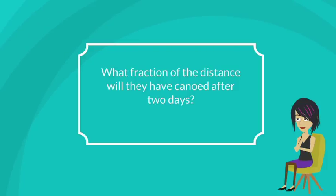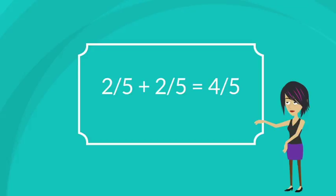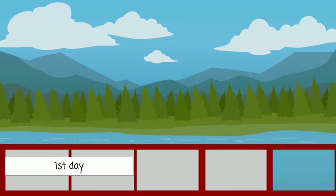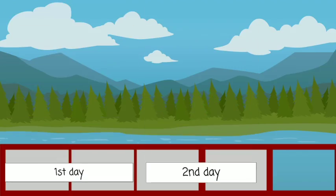What fraction of the distance will they have canoed after 2 days? 2/5 plus 2/5 equals 4/5. First day, 2/5. Second day, 2/5. 4/5.